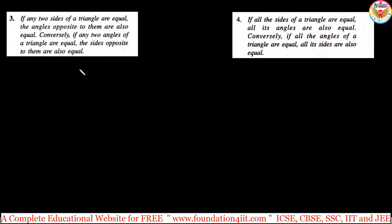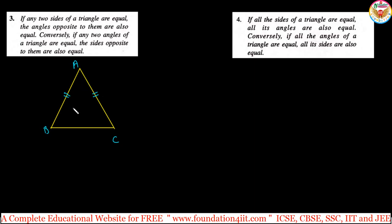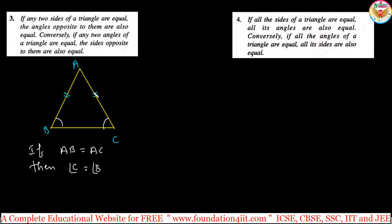Just as different measurements give different sides and angles, if two side lengths are equal — say in triangle ABC, AB equals AC — then the angles opposite those two sides are also equal. The side opposite AC is angle B, and the side opposite AB is angle C. So if AB equals AC, then angle C equals angle B.